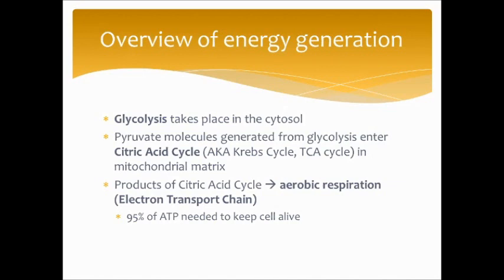The products from the citric acid cycle enter the electron transport chain, which is the site of aerobic respiration. Before that point, oxygen was not needed, but the electron transport chain requires oxygen. The electron transport chain is the end site of this energy generation pathway, going from glycolysis to the citric acid cycle to the electron transport chain. The electron transport chain generates about 95% of the ATP needed to keep the cell alive.